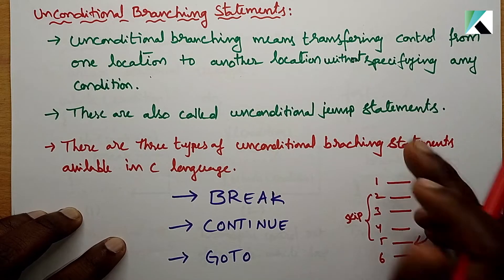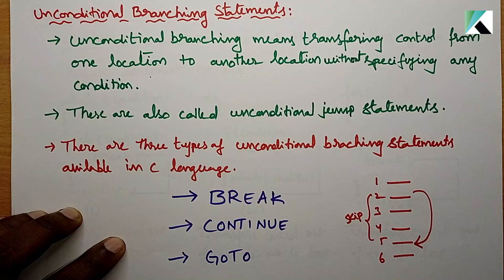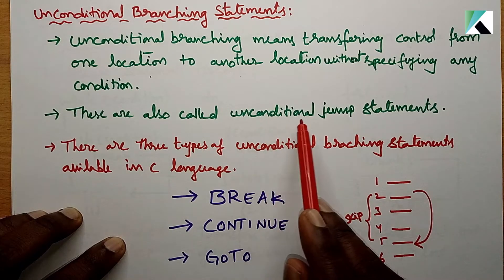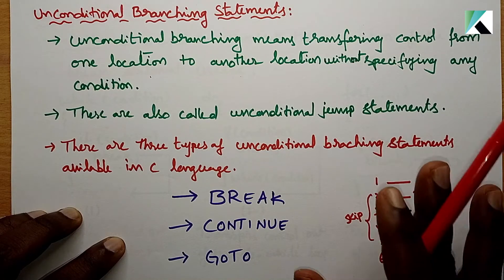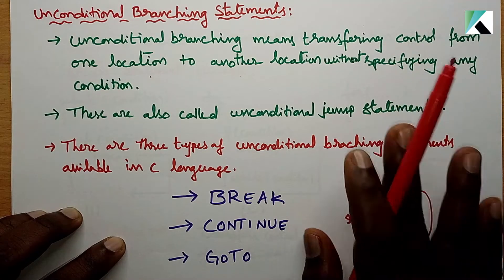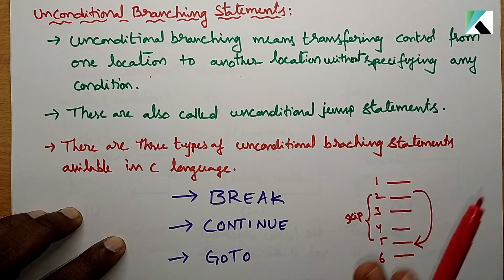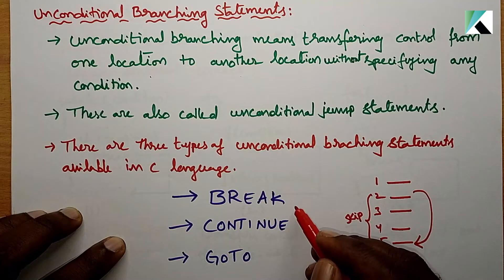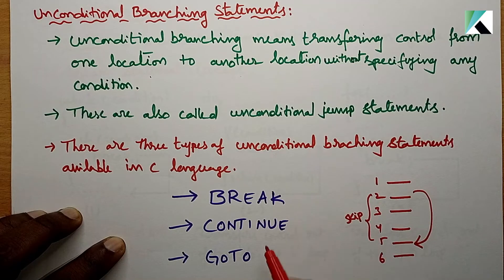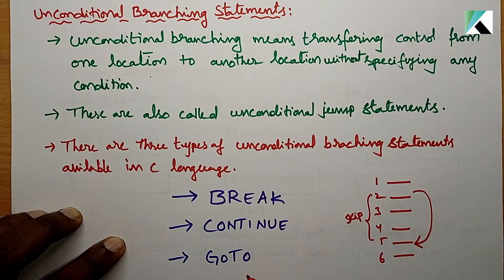Jumping means we need to transfer the control. In C language, we have three unconditional branching statements: the first one is break, the second one is continue, and the third one is goto.